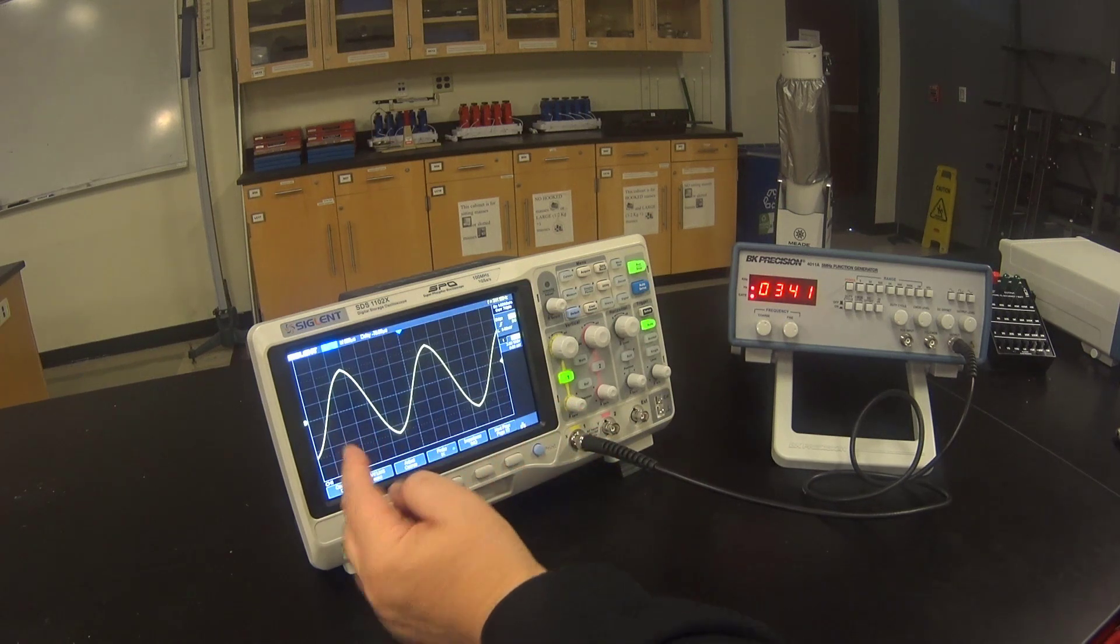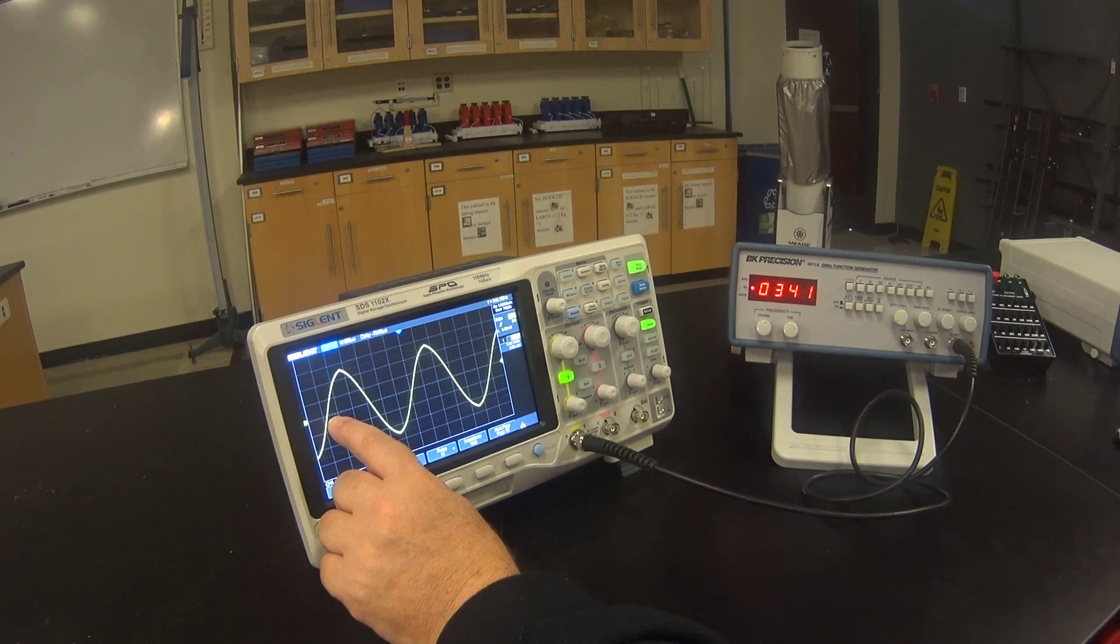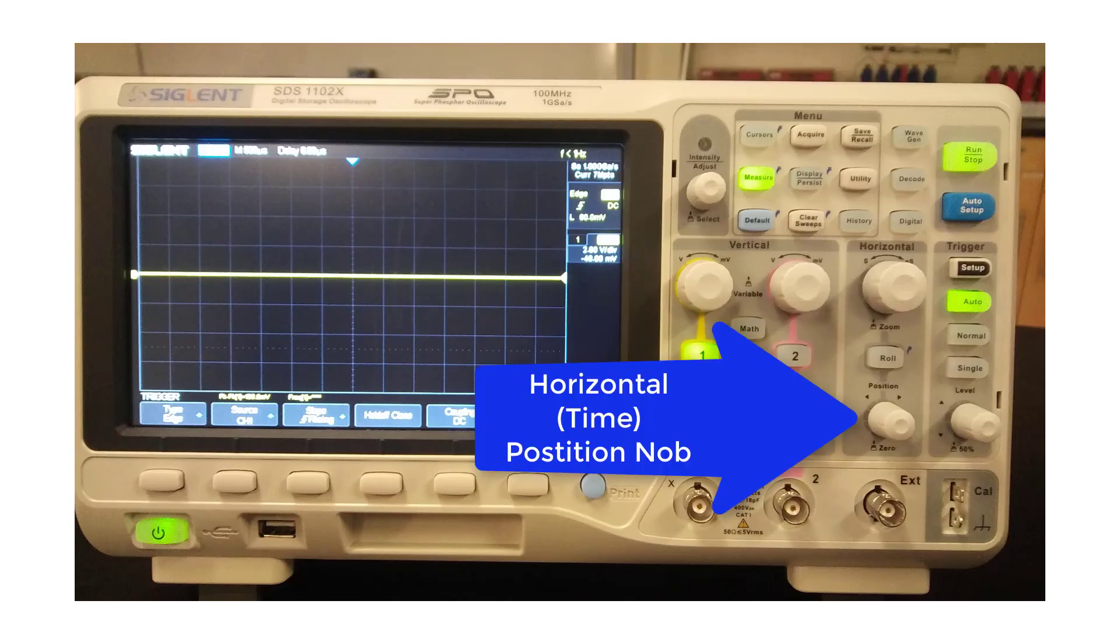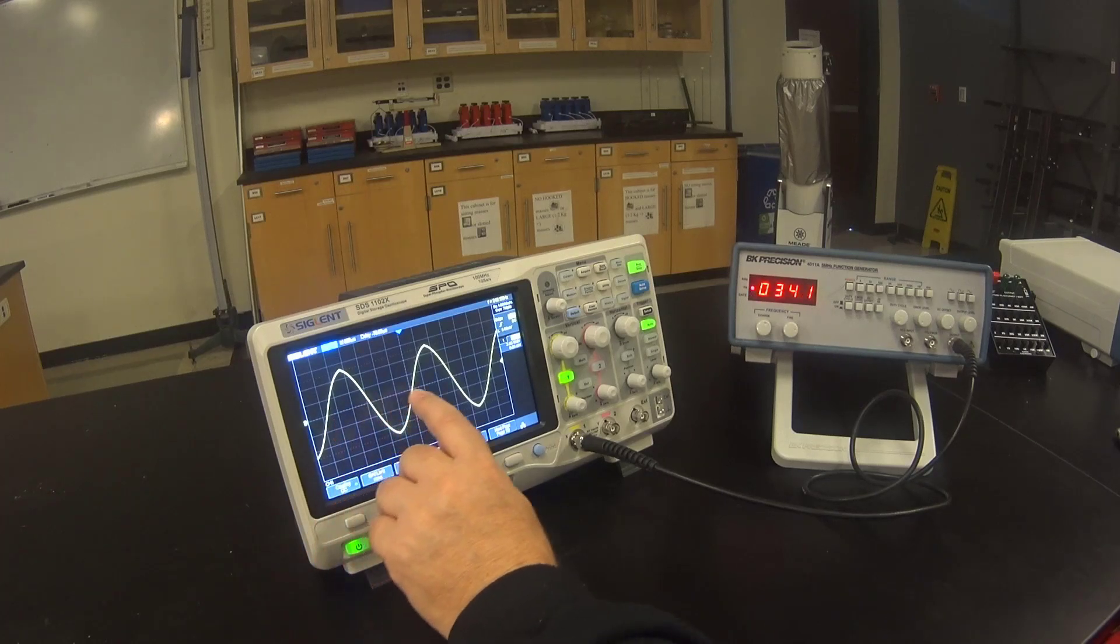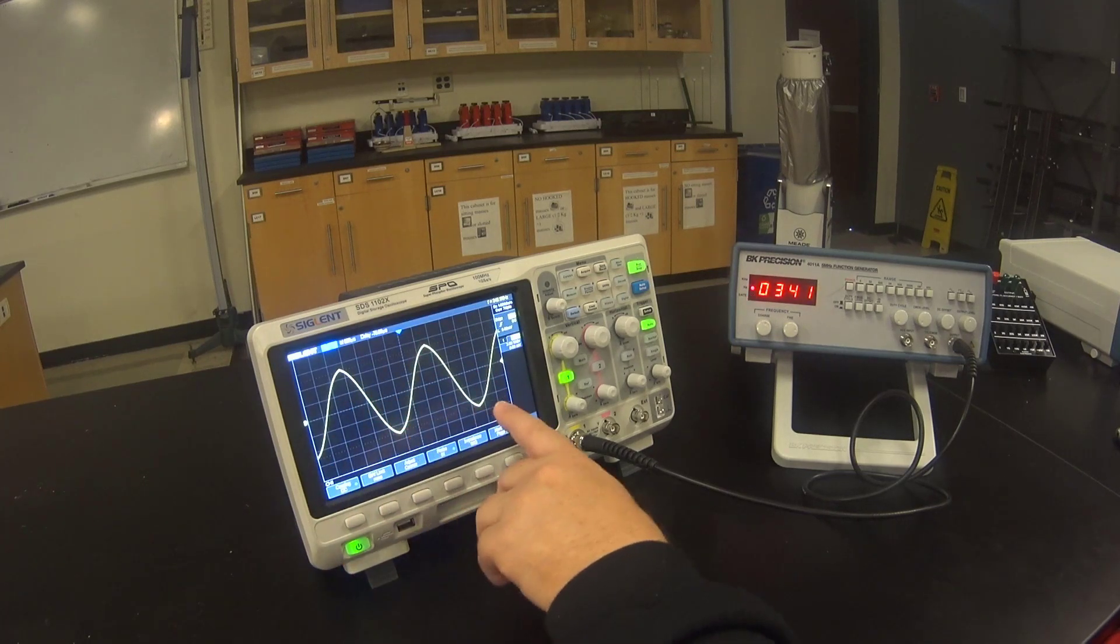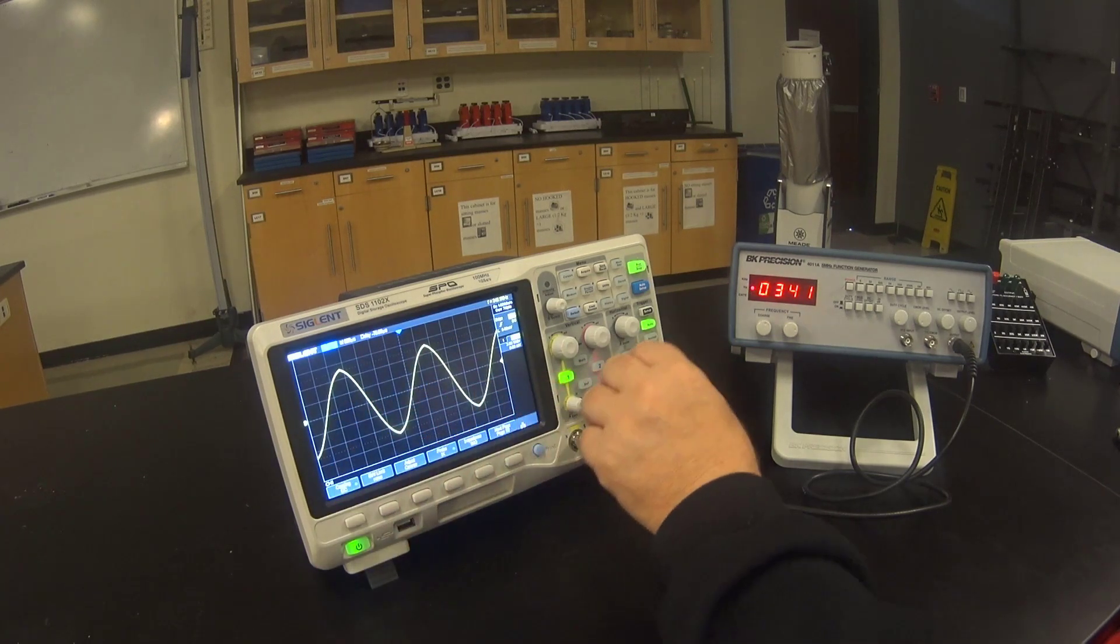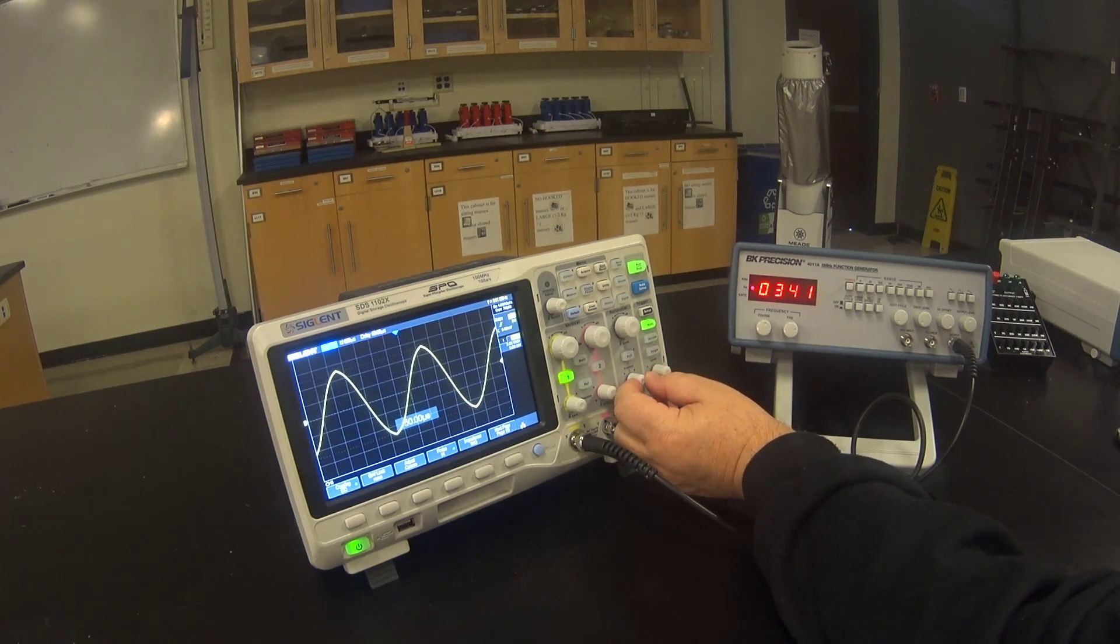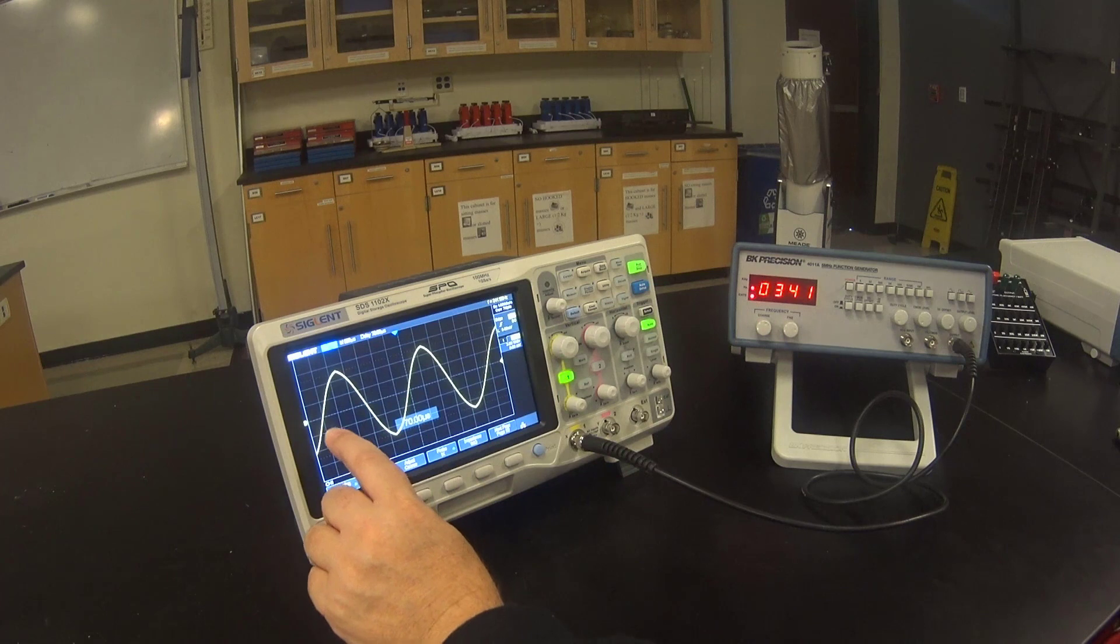I want to measure the time from where it crosses the zero voltage line while increasing to the next time it crosses the zero voltage line while increasing. We can move the whole signal left or right using the horizontal or time position knob. I'm going to measure the wave from here to here. I could have also measured from peak to peak or from trough to trough. I'm going to use the horizontal adjust knob to move the beginning of my wave to a convenient crossing place. Right there.